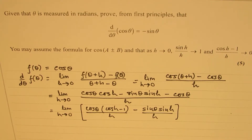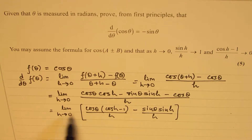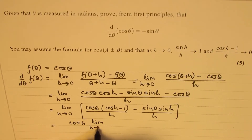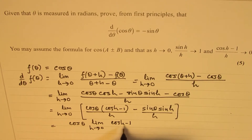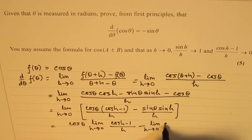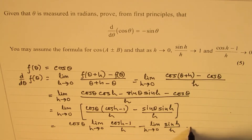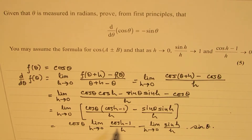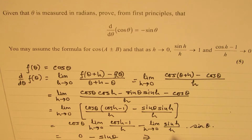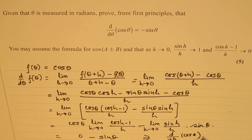Using the properties of limit, we can rearrange and write this as cos θ times the limit h→0 of (cos h minus 1)/h, minus sin θ times the limit h→0 of sin h/h. Now, the limit of (cos h minus 1)/h as h approaches 0 is 0, so that part is 0. And this limit is 1, so we get minus sin θ. That shows that the derivative of cos θ is minus sin θ.